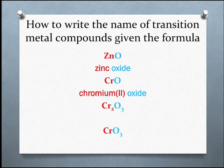What about Cr₂O₃? Cr₂O₃ is chromium(III) oxide. Remember that the Roman numeral refers to the charge of the metal, not to the number of metal ions in the formula.